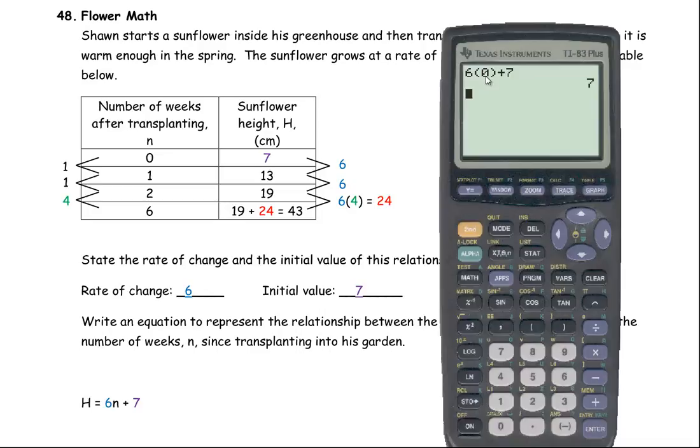So you see 6 times 0 plus 7 is 7, that's that 7 right there. If I go 6 times 1 week plus 7, that means it started at 7 and for 1 week it grew 6 centimeters, so it's at 13.